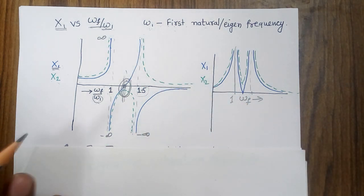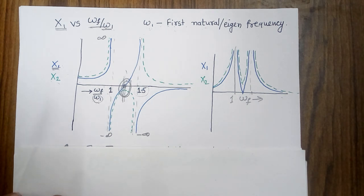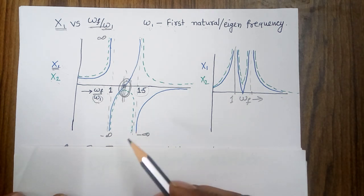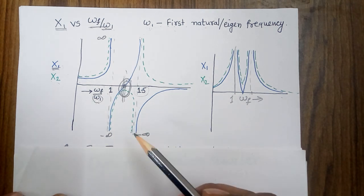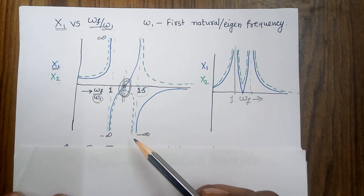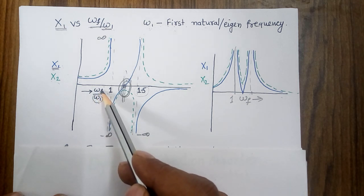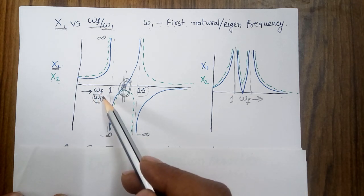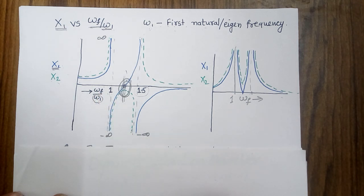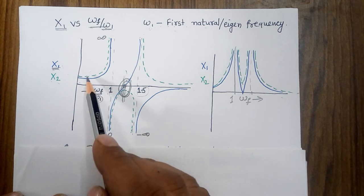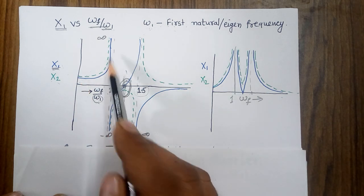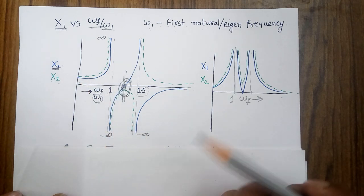I would suggest you should not worry too much about how these lines are going, because when you put in a specific value of excitation frequency with all other values fixed, you will find this response. You can use any computer software to compute it.